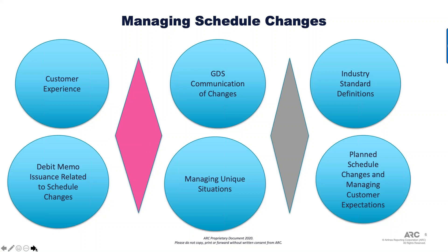We're going to be looking at six major areas covered in this document. One key piece is the customer experience. When you are a customer utilizing a travel agency to fulfill your ticket needs, you're looking at the agency as an extension of the airline. When there's a problem — say an irregular operation and a flight is delayed — the customer, if not serviced well, could potentially take that as a problem from the agency side, even though the agency had nothing to do with the actual irregular operation.